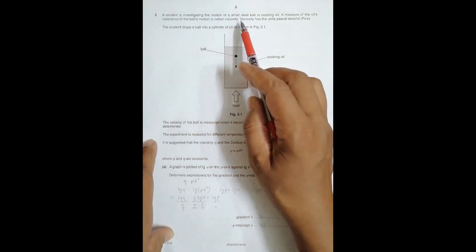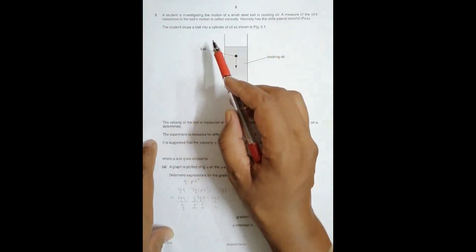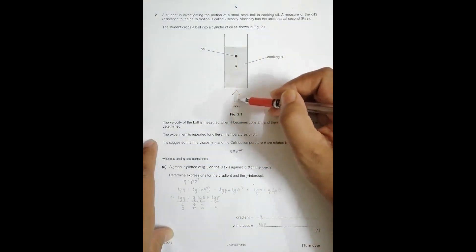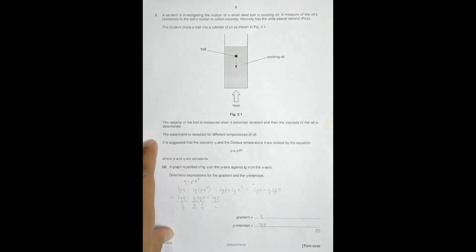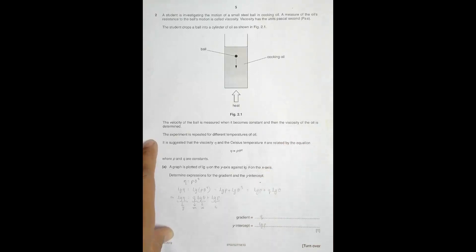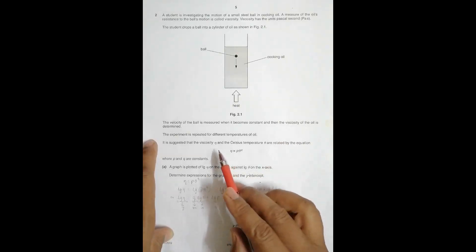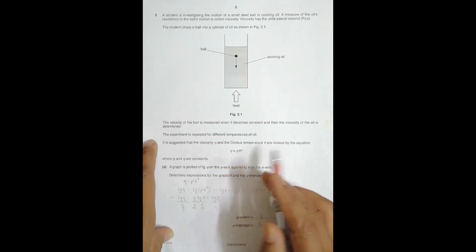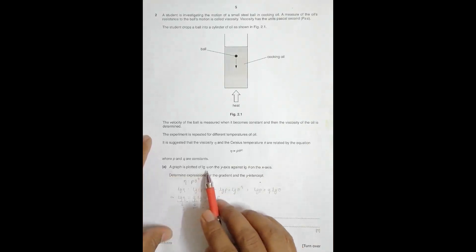A student is investigating the motion of a small steel ball in cooking oil. A measure of the oil's resistance to the ball's motion is called viscosity, with units of Pascal second (Pa·s). The student drops the ball into a cylinder of oil, the velocity is measured when it becomes constant — that means when it attains terminal velocity — and then the viscosity of the oil is determined. The experiment is repeated for different temperatures. The viscosity η and the Celsius temperature θ are related by the equation η = pθ^q, where p and q are constants.